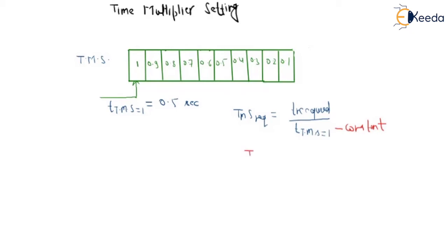So TMS2 upon TMS1 is equal to T2 upon T1. It means this is how we will change the value of TMS and we can get the corresponding changes in time. Let us assume corresponding to TMS equal to 1, the operating time is 0.5 seconds.